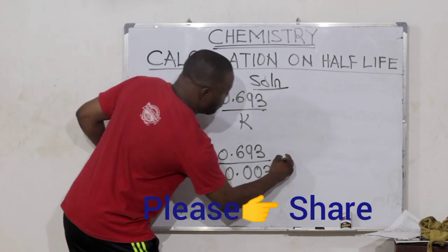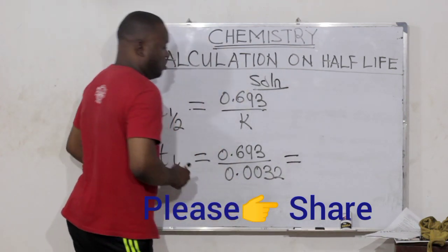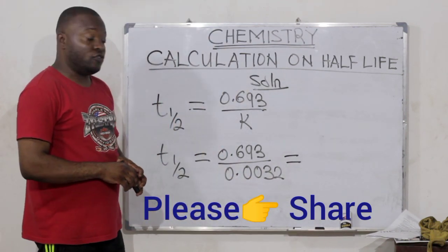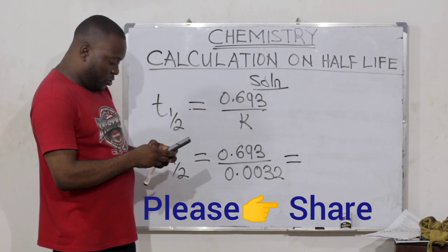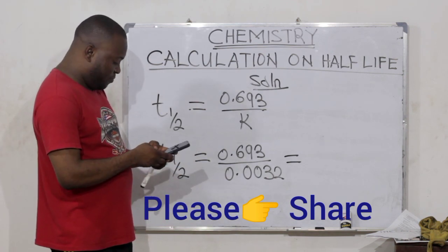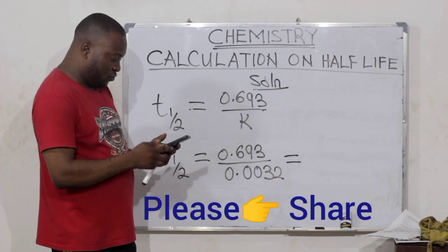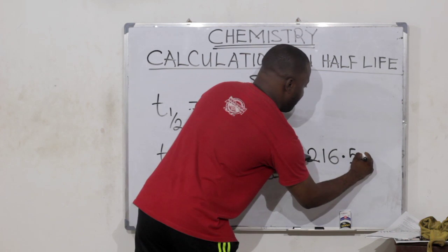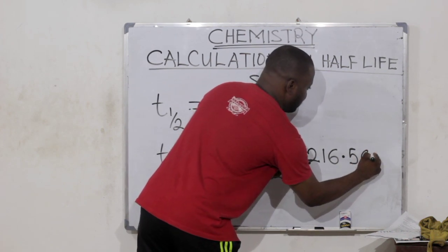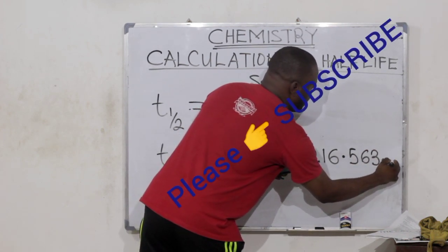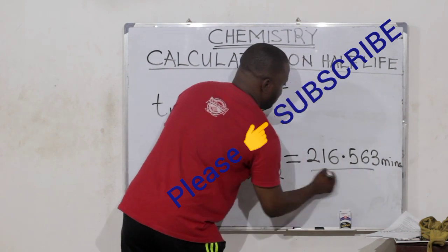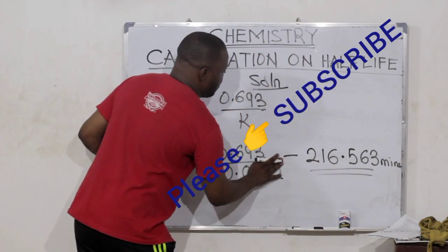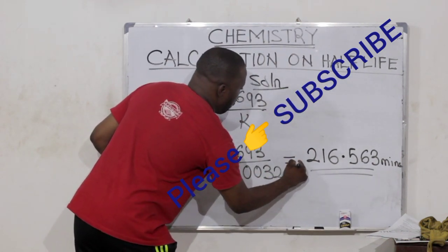When you compute this with your calculator, you are going to have 0.693 divided by 0.0032. That gives us 216.563 minutes.